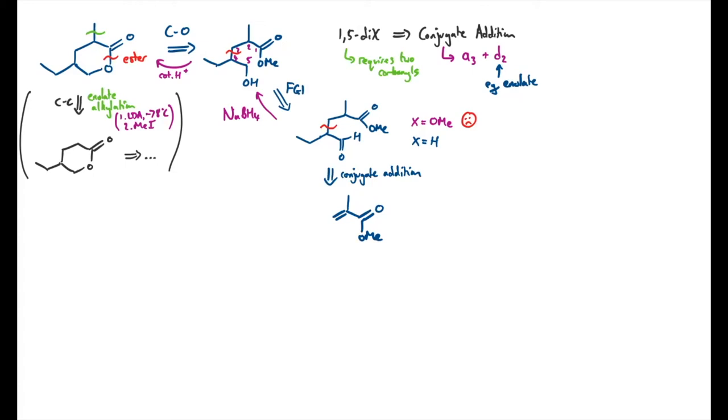This is actually readily available, this is methyl methacrylate, and it's very common in the polymer industry for example. And the other component is just an aldehyde, specifically butanal, which is of course readily available.